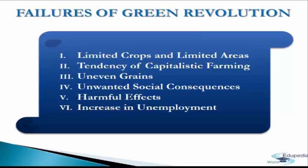On the contrary, other states where the Green Revolution did not expand continued to be poor. Regional disparities and imbalances in terms of income and wealth inequalities widened, as only regions well endowed with resources and irrigation benefited. The next failure is the tendency of capitalistic farming — the Green Revolution benefited large and rich farmers only, as they could spend large amounts on pesticides, fertilizers, and irrigation. Loans were available to rich farmers at concessional rates, while small and marginal farmers could not afford the new technology due to poor financial condition, poor credit worthiness, and small land holdings.